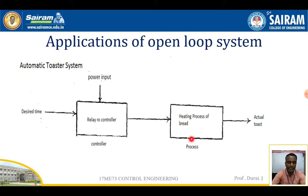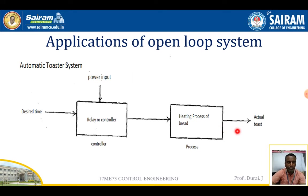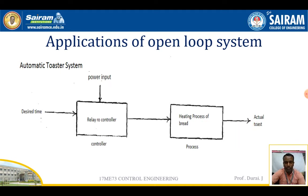Due to current fluctuation, sometimes there is more current, so the bread may be over-toasted. And sometimes due to less voltage, the bread toasting will be less. So how can that be identified — whether the bread is toasted correctly or not — the human has to taste it. Then only we will know about the quality of the toasted bread from the machine.